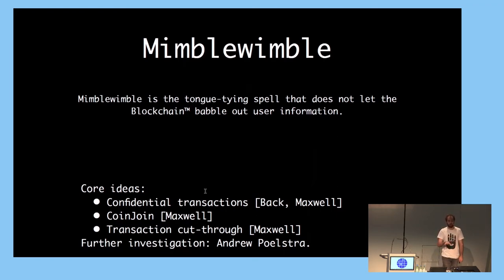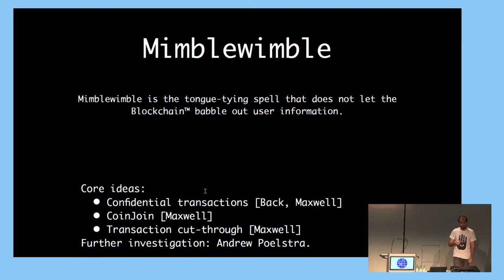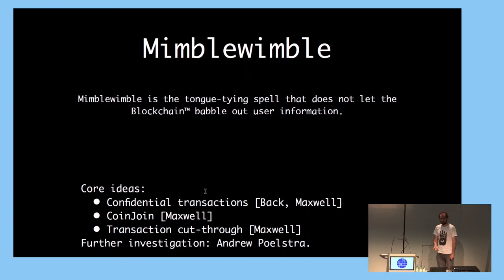It's a standalone cryptocurrency, but it was built on three main ideas initially envisioned for Bitcoin, for which Gregory Maxwell should be credited: namely, confidential transactions, which adds privacy on top of Bitcoin; CoinJoin, which adds anonymity; and transaction cut-through, which adds scalability.